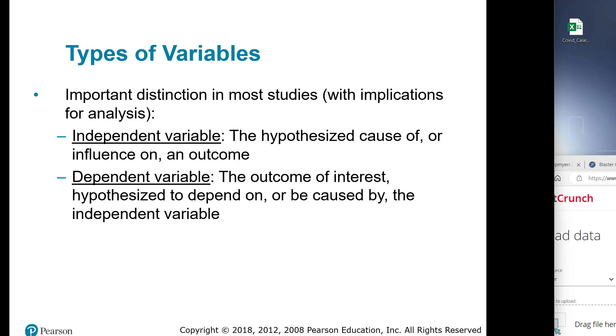There are two types of variables that are important in a study, the independent variable. The dependent variable is the one to think of first, it's the outcome. What was their cholesterol when they ended the study? Did they get sick, or did they not get sick? Did they survive the treatment, or did they not survive the treatment?